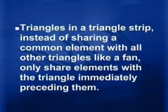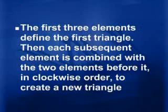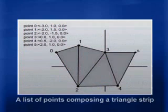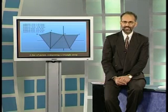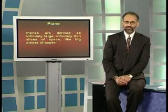In triangle strips, instead of sharing just one common element, we share edges of adjacent triangles — each triangle shares the edge of the most recently preceding triangle. The first three elements define the first triangle; each subsequent element is combined with the two elements before it in clockwise order to create a new triangle. For example: vertices 0,1,2 form the first triangle; 1,2,3 form the second; 2,3,4 form the third, and so on. This saves a lot of space as well.